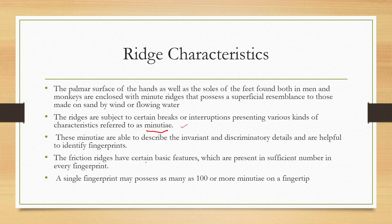The finger ridges have certain basic features present in sufficient number in every fingerprint. There are enough characters to identify one person — in court, some states require 8 or 12 matching characters. A single fingerprint may have as many as 100 or more minutiae on a fingertip.